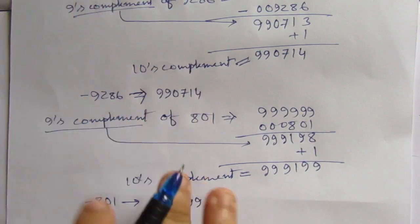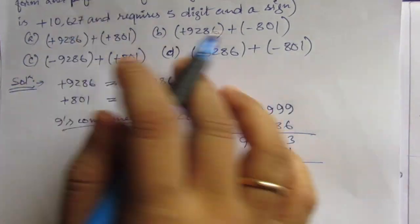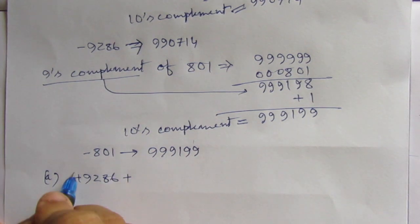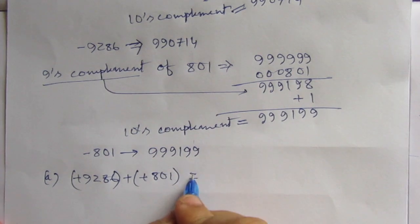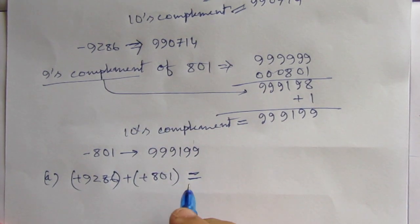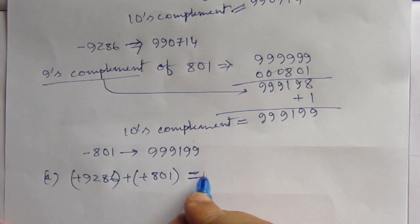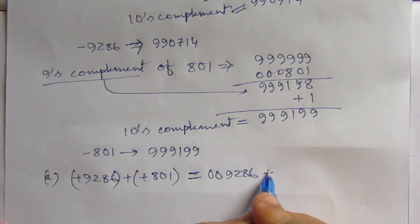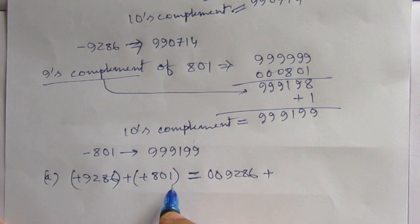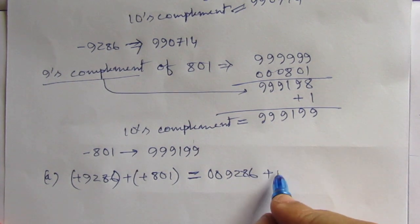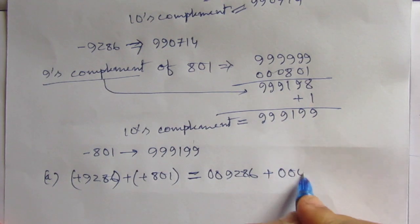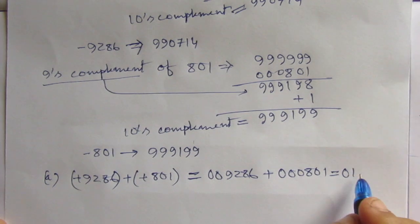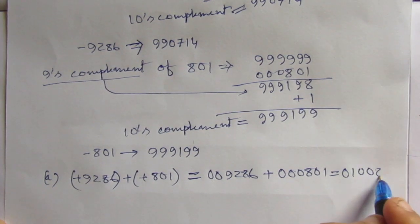Now, let us do all the addition and subtraction. A equals plus 9, 2, 8, 6 plus plus 8, 0, 1. So, the 9, 2, 8, 6 can be represented as 0, 0, 9, 2, 8, 6 plus this 801. So, this addition. Therefore, we can directly write it as 0, 0, 0, 8, 0, 1. So, we will get 0, 1, 0, 0, 8, 7. So, this is the answer.